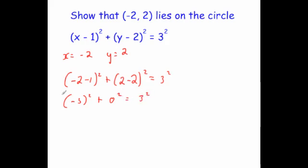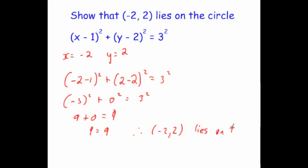When we square all these: minus 3 squared is 9, plus 0 squared is 0, equals 9. So we get 9 equals 9. Therefore, the coordinate (-2, 2) lies on the circle. It's quite important that you annotate your answer and give your justification at the end.